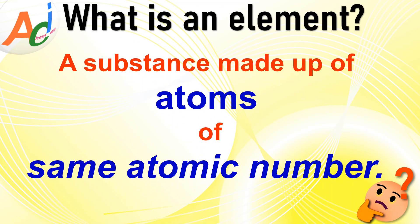Let us begin by exploring the fundamental question: What is an element exactly? In modern terms, an element is defined as a substance composed of atoms with the same atomic number. It is that simple. Essentially, each element is uniquely characterized by the number of protons in the nucleus of its atoms, which we call the atomic number.